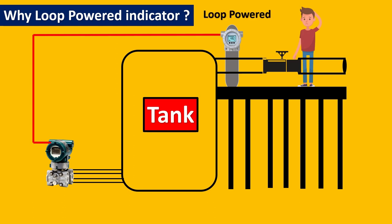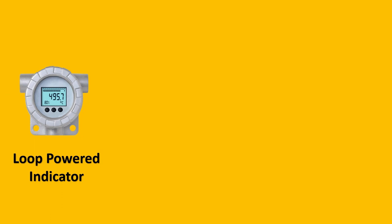This is exactly what is called as loop powered indicator. Because this is loop powered, you don't need any additional IO in the control system, and the operator can easily operate the valve by just looking at the loop powered indicator. We can say in very simple words that loop powered indicator is nothing but photocopy, or Xerox copy you can say, of your transmitter.